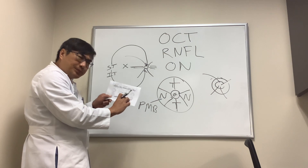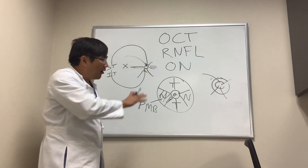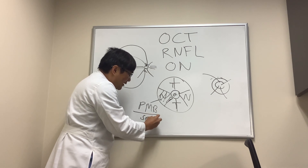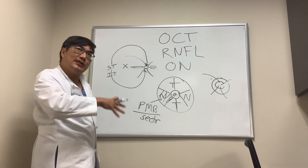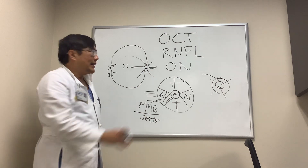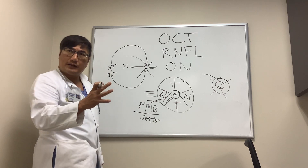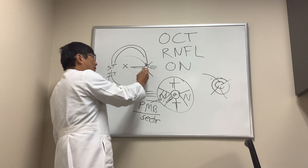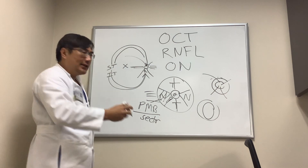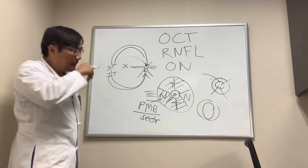When an OCT shows just one decreased quadrant, it means you have sector nerve fiber layer loss. You can have loss of just the papillomacular bundle, which usually produces a central or cecocentral scotoma — this is the fiber running from the macula to the optic nerve, typically seen in toxic, nutritional, or Leber hereditary optic neuropathies. The prototype for loss of the arcuate temporal fiber is glaucoma, where you get vertically oriented cupping and the temporal fiber sector may be out.